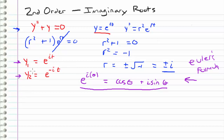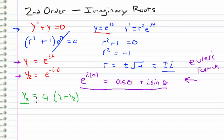Recall from a previous video that any linear combination of two valid solutions is also a valid solution. I'm going to define a new solution YA as some scalar c1 times y1 plus y2. Since this is a scalar times a linear combination of two valid solutions, YA is also a valid solution. Similarly, I'll define YB equal to another constant times y1 minus y2, which is also a valid solution by the same logic.